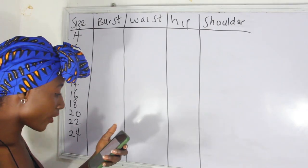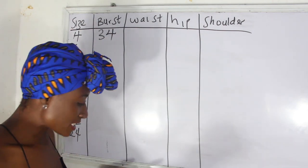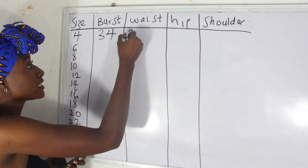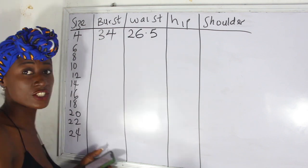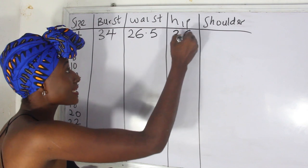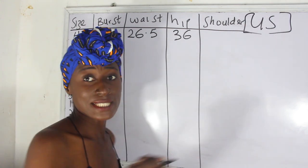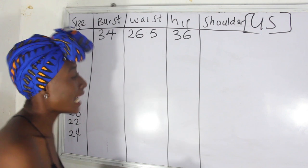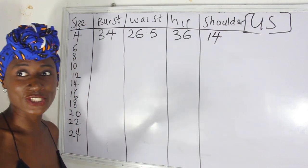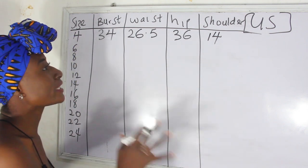The bust measurement for a size 4 is 34 inches. The waist measurement of a size 4 is 26.5 inches. The hip measurement of a size 4 is 36.5 inches. Note that this is a US size chart. The shoulder measurement for a size 4 is 14 inches.